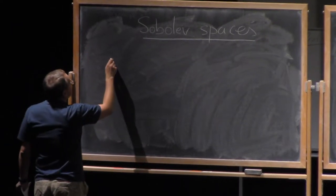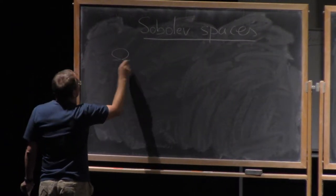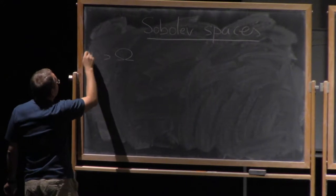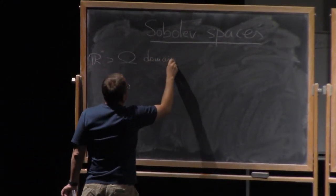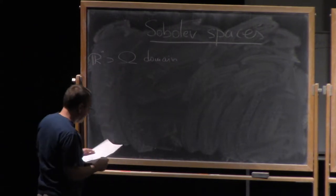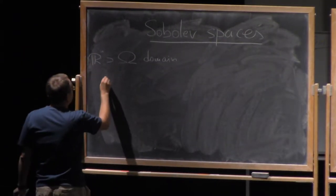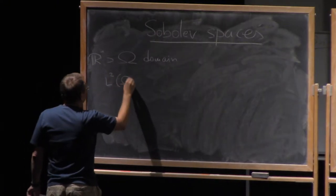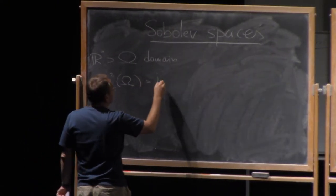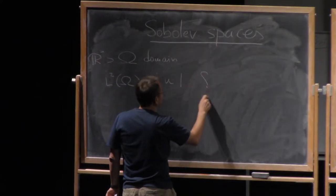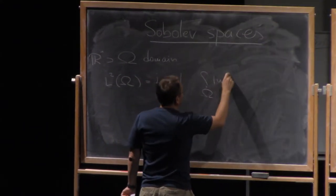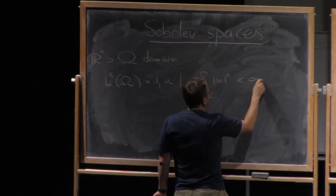So in the simplest case, it assumes that we have a domain in R^n that is an open connected subset. We can define the space L² of omega, so this is a space of all those functions which are square integrable, less than infinity.